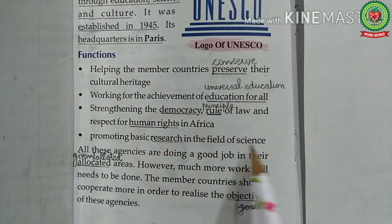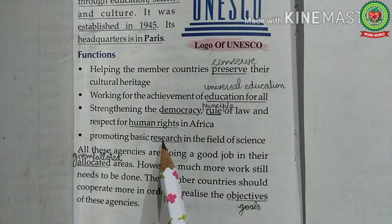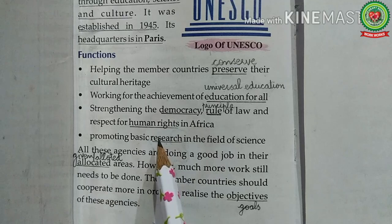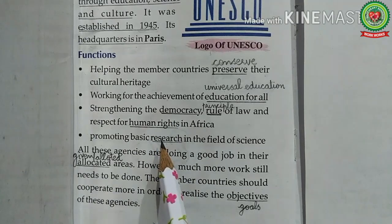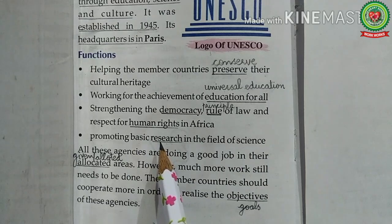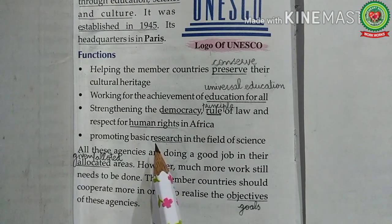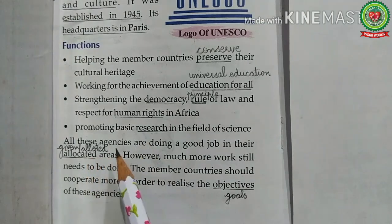Promoting basic research in the field of science: research means a detailed and careful study of something to find out more information. UNESCO plays a major role in promoting science and technology — it helps establish science and technology institutes in all parts of the world, arranges conferences of scientists from all over the world, and promotes the study of social sciences. All these agencies are doing a good job in their allocated areas.